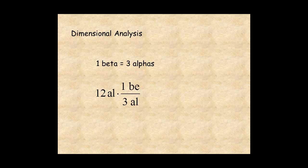The alphas cancel, and you have 12 alphas is equal to 12 divided by 3 equals 4 betas.